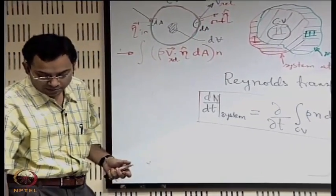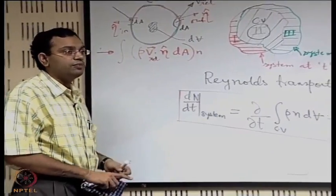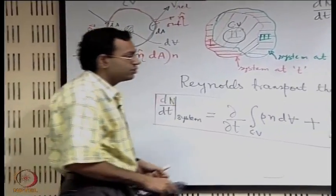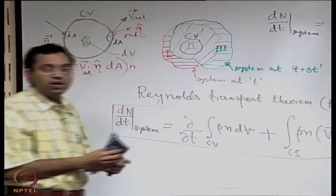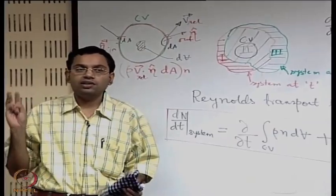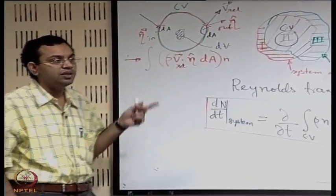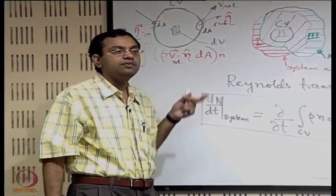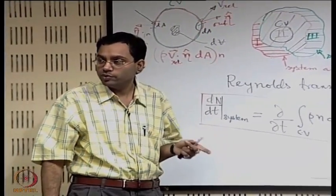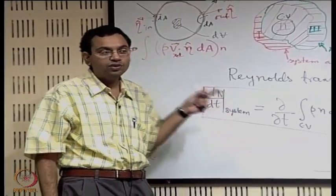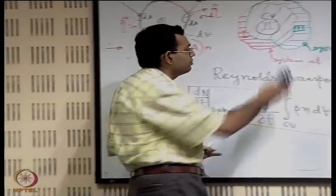As an example, we will start with the conservation of mass. In fluid mechanics, we will be discussing three conservation principles in this chapter: conservation of mass, conservation of linear momentum, and conservation of angular momentum. We will first start with the conservation of mass.